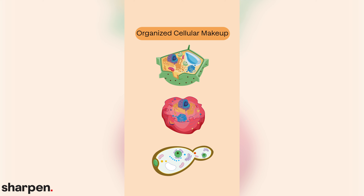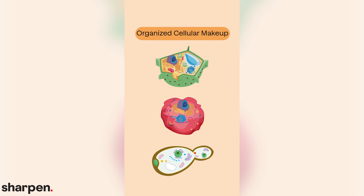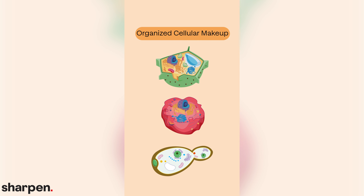While cells found in plants and animals come in many sizes and shapes, they all contain the same basic structure of nucleic acid, cytoplasm, organelles and membranes, allowing them to perform simple to specialized functions within an organism.